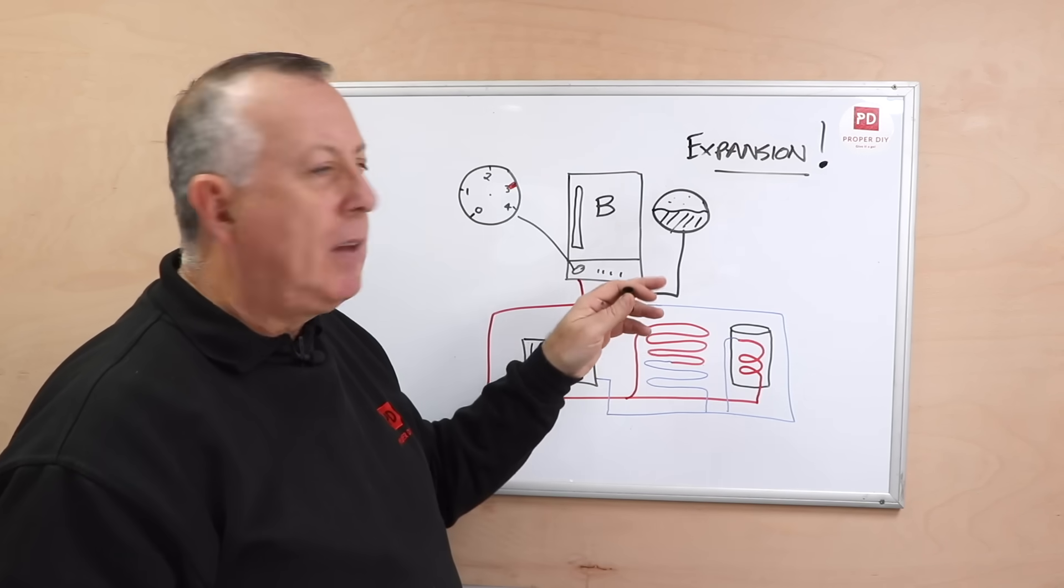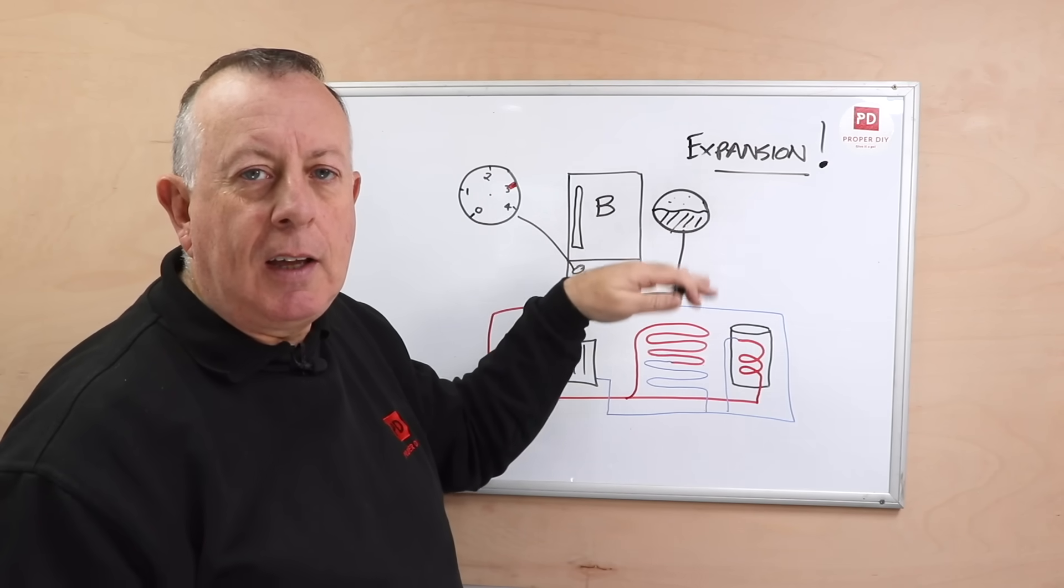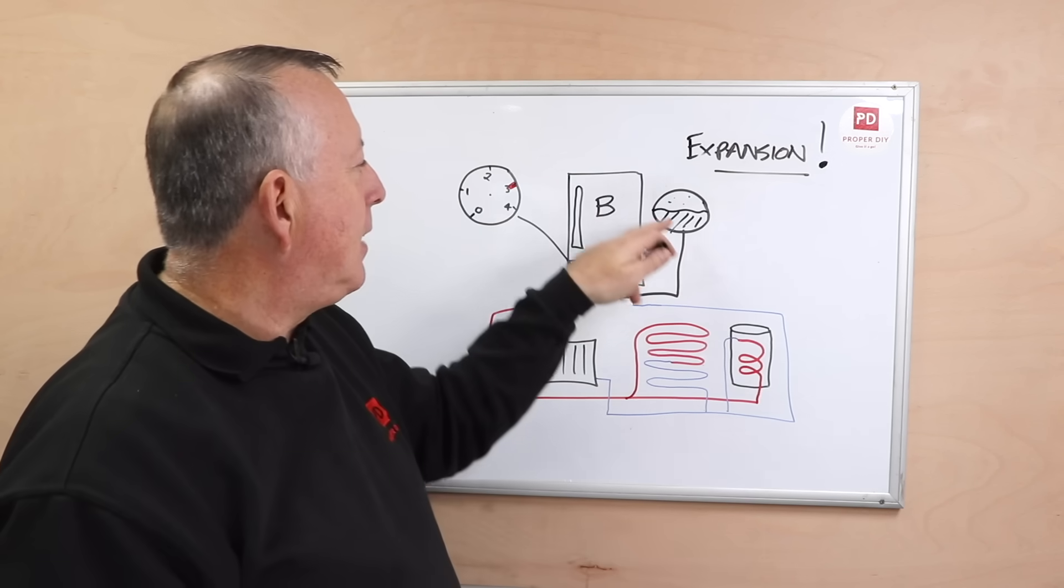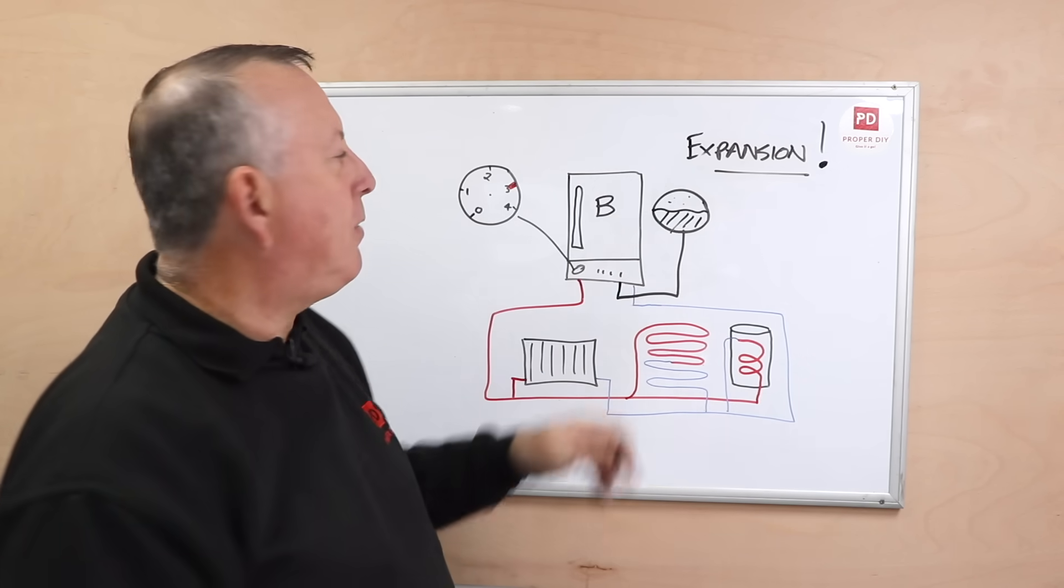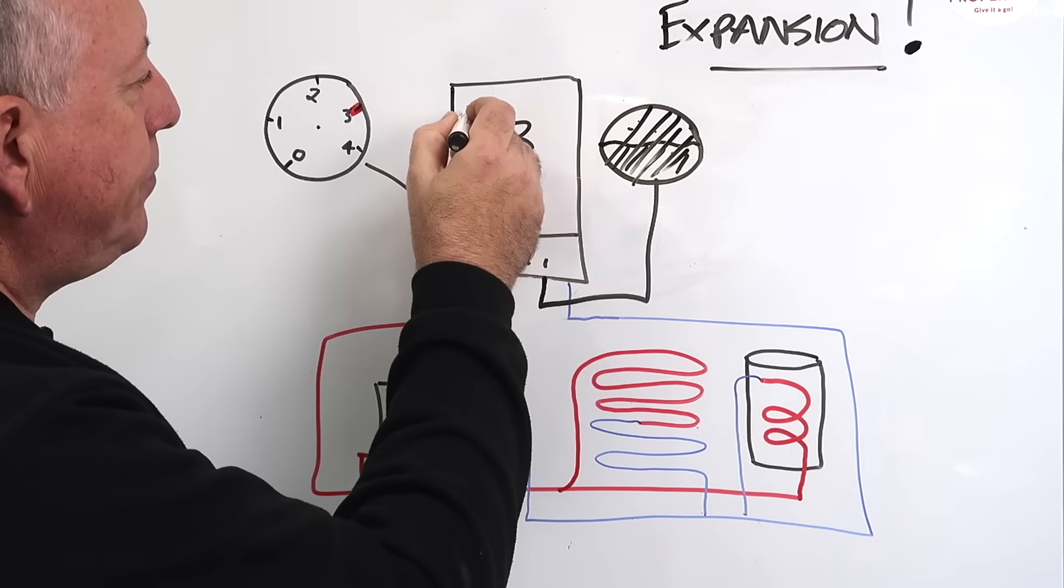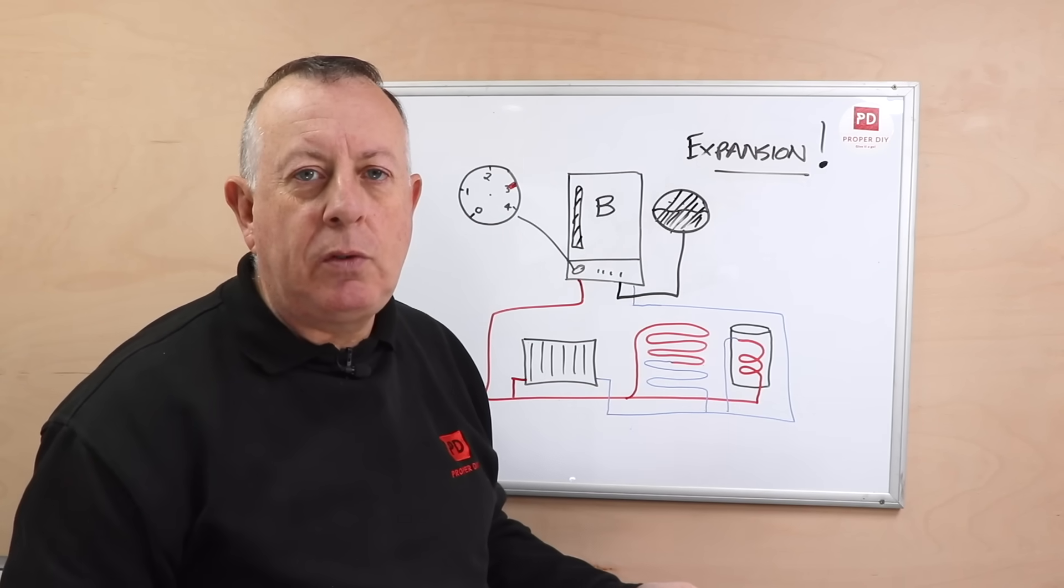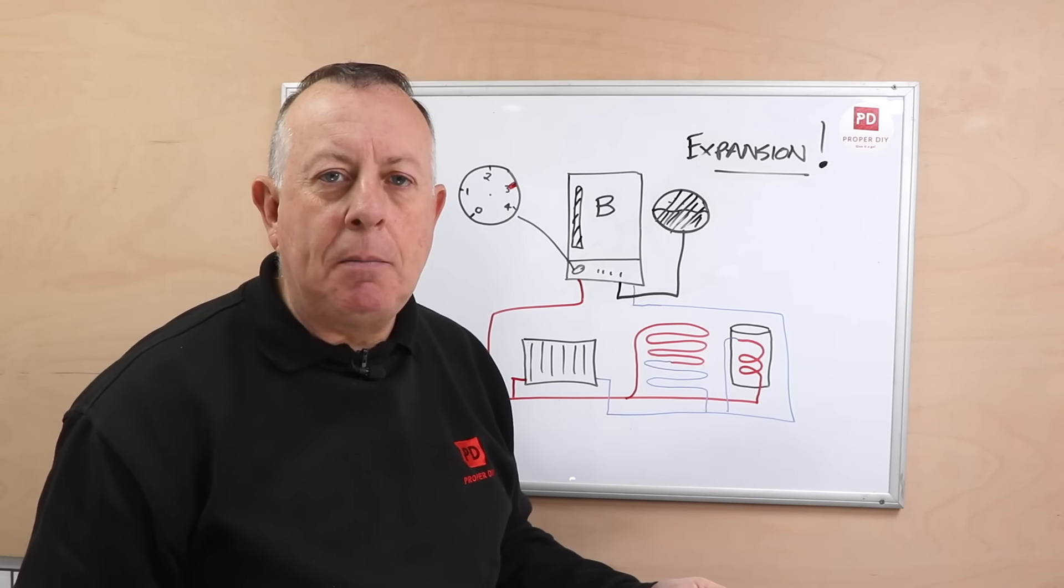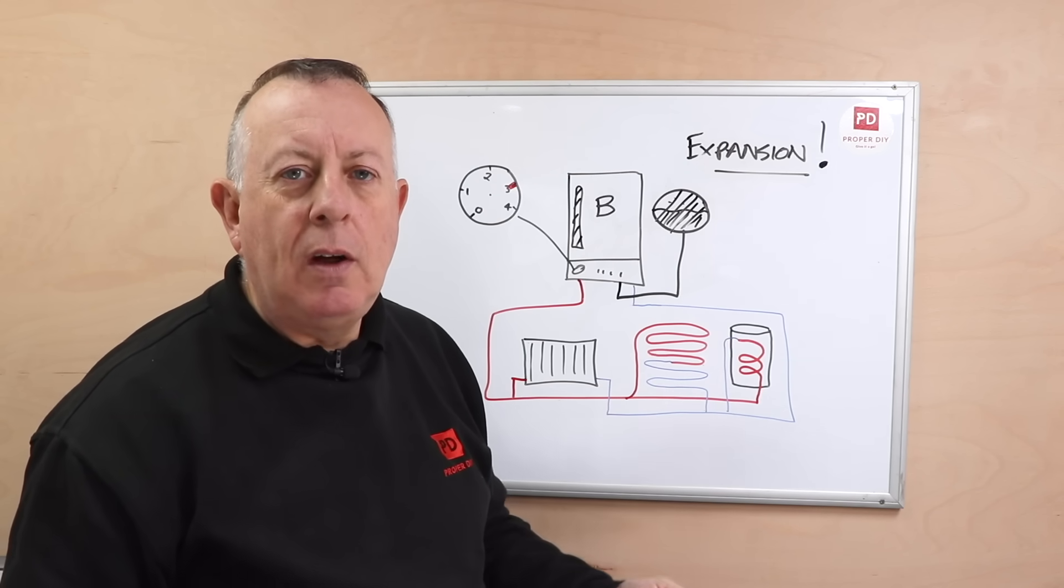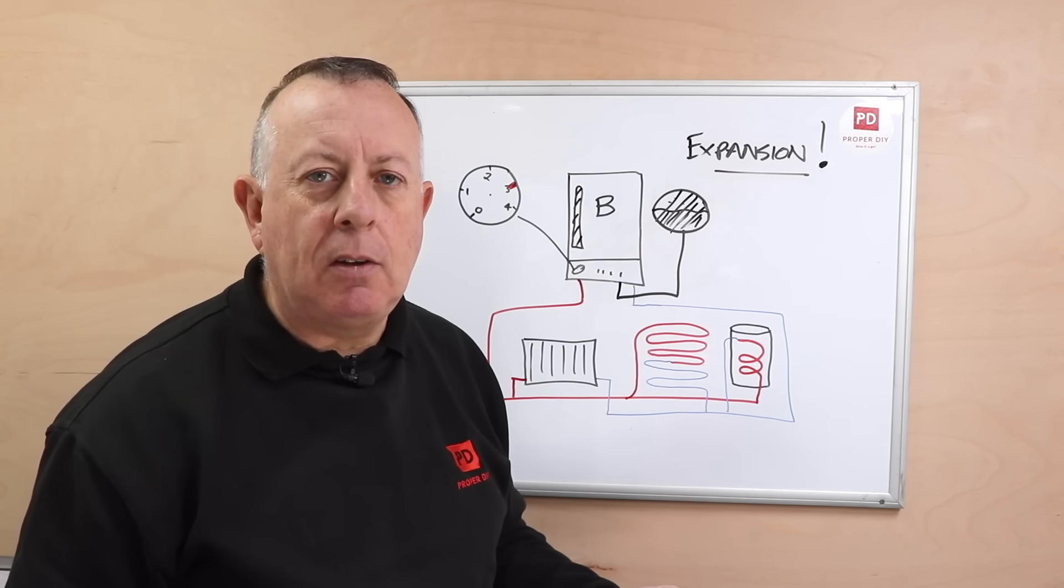Now how can an expansion tank lead to lowering the pressure of our system? Well the membrane that's in an expansion tank moves continuously in operation, so it's quite common in time that this membrane can fail. And if it does fail, essentially water will fill that tank. Once the expansion tank is full of water then it can't expand anymore, so we have a problem with where does the water go.